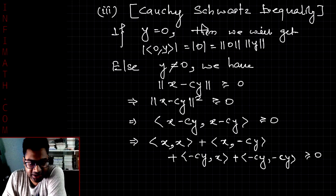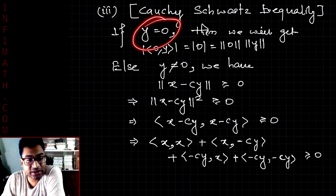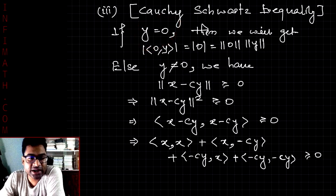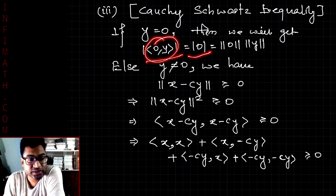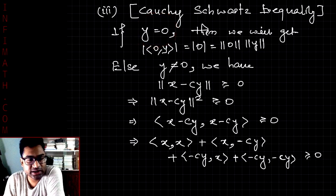The third property is the Cauchy-Schwarz inequality, and we will prove it in two cases. First, consider y equal to zero. When y equals zero, the inner product with any vector is zero, so the left side is zero. Also, the norm of y is zero, so the product on the right side is also zero. We get equality: 0 = 0, so the inequality is satisfied when y equals zero.